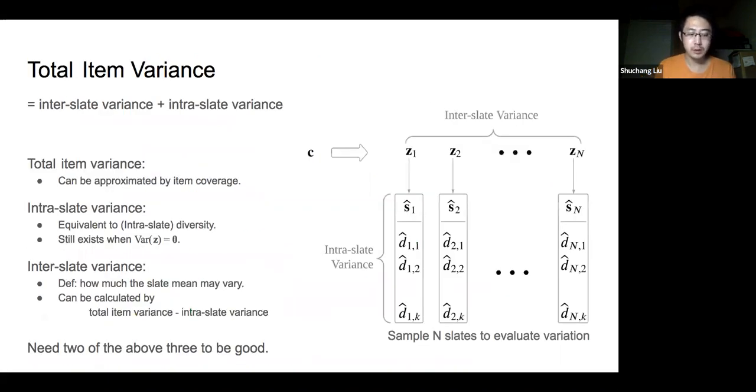Before we observe how item variance affects the model performance, we would first have a look at the detail of its measurement. Specifically, we can decompose the total item variance into the inter-slate variance and the intra-slate variance. While the inter-slate variance describes how the mean item varies across slates, the intra-slate variance reveals basically the diversity within each slate.